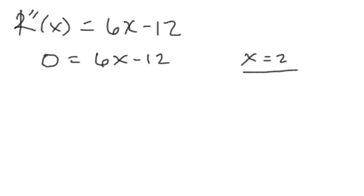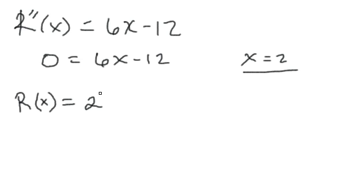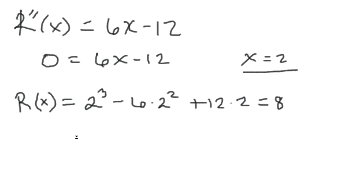To find the inflection point, I'm going to take the actual point on the graph. We take the original function R and plug 2 directly into it: 2 cubed minus 6 times 2 squared plus 12 times 2. After doing the arithmetic, you should get 8. So the inflection point — I'll label it IP — is the ordered pair (2, 8).